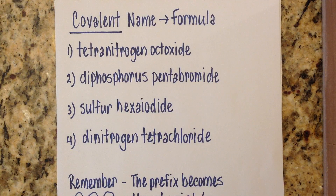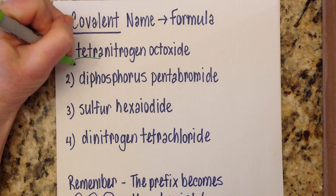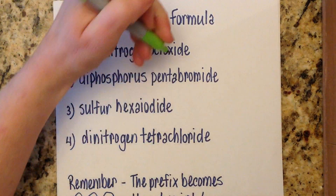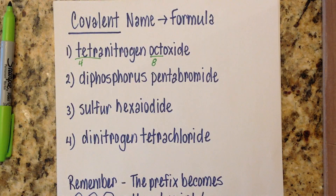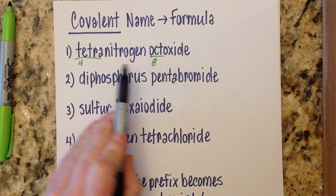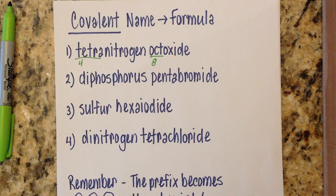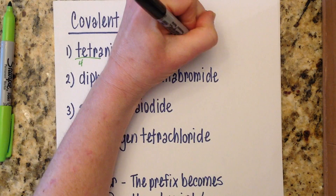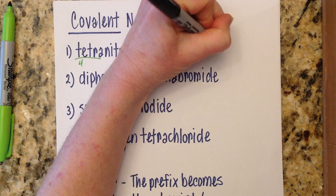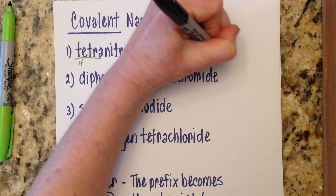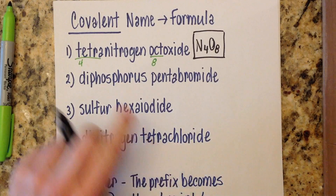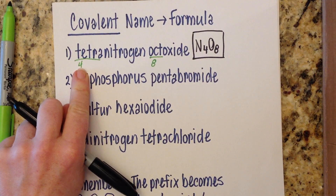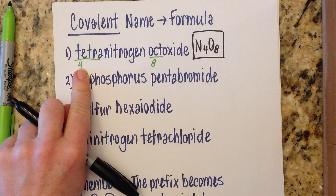Let's look at number one: tetranitrogen octoxide. Tetra means four, and octa means eight. So this name is telling me I have four nitrogens and eight oxygens — those just become your subscripts: N4O8. You just took a really scary-looking name and wrote a very easy-to-read formula.